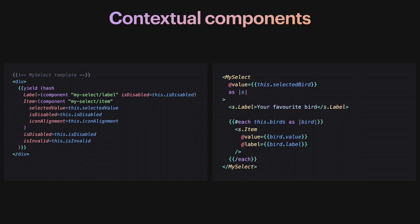I'm a big fan of the composition patterns that contextual components make available — this is so unique and really cool about Ember. This doesn't really exist in other frameworks. It's one of my favorite features. But it doesn't really fix prop drilling — it doesn't remove it, it just moves the prop drilling elsewhere. If the yielded components had more components deeper down the tree, you'd still have to repeat all those props. It doesn't actually solve the whole problem.